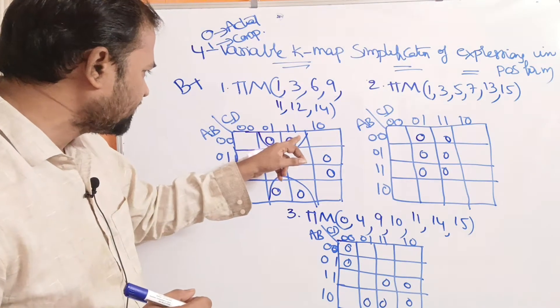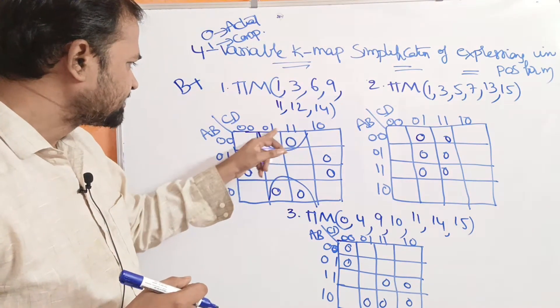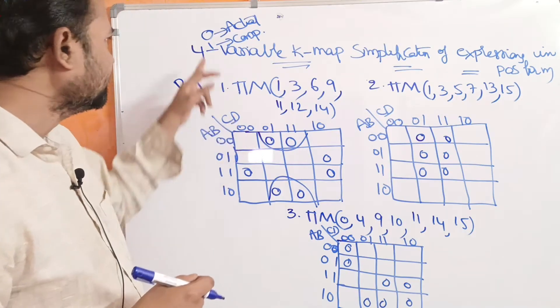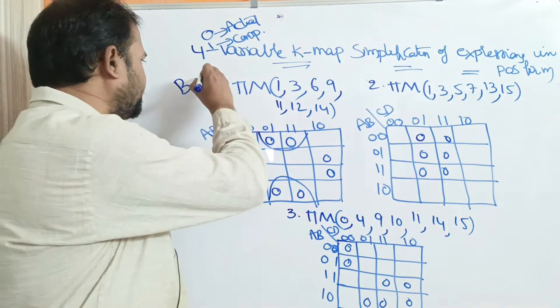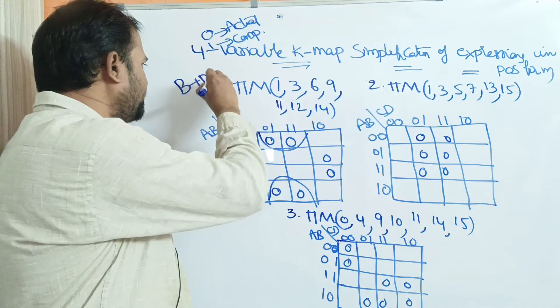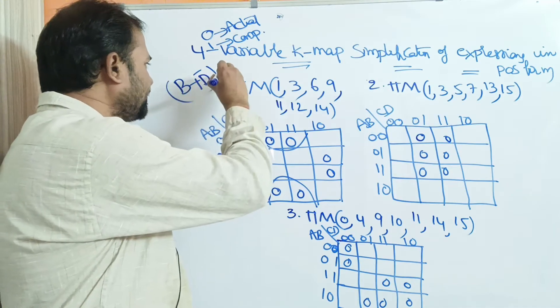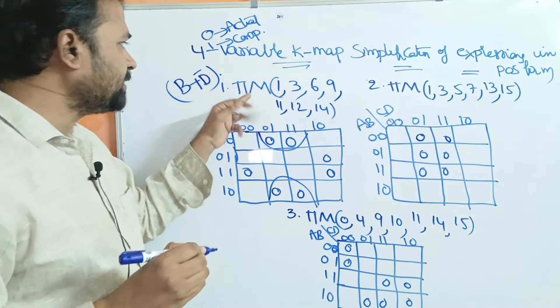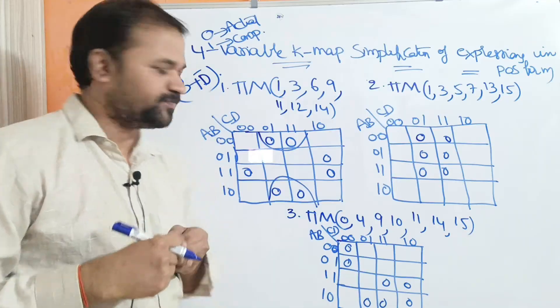If we observe these two cells, 0110111, the second one is common. The second one is D. Here, one means complement of the variable. So we write B plus D̄. The terms are connected with a product because π means product of sums.